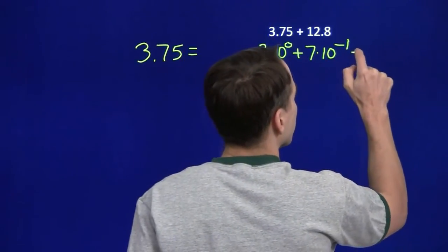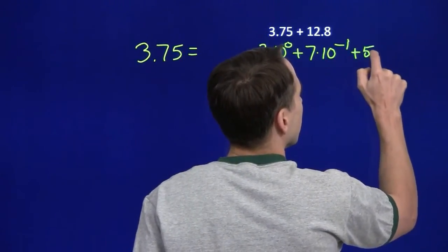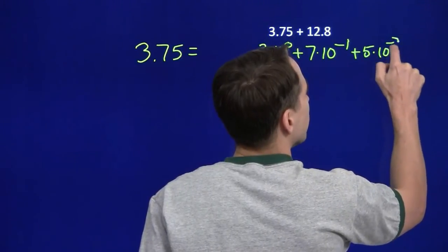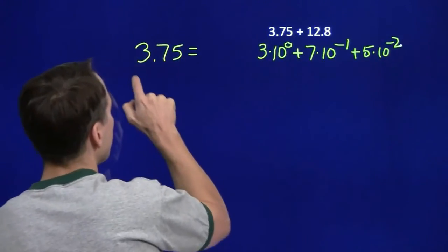And the 5 is out there in the hundredths place. That's 5 times 10 to the minus 2. And we're going to do the same thing with 12.8.